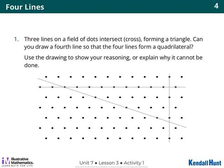So, today, for activity one, three lines on a field of dots intersect or cross, forming a triangle. Can you draw a fourth line so that the four lines form a quadrilateral? Guys, what's a quadrilateral? Use the drawing to show your reasoning, or you can explain why it cannot be done.